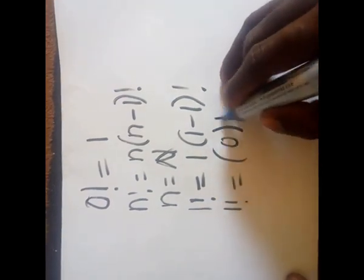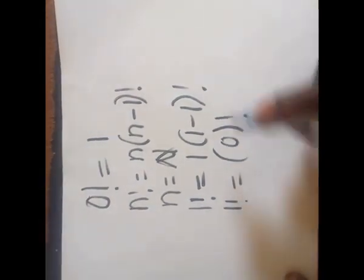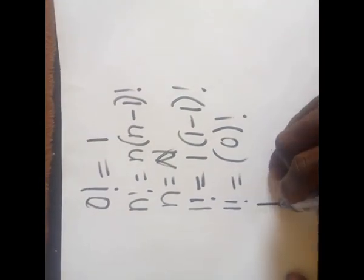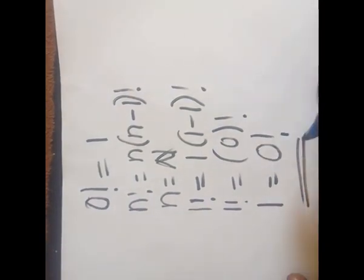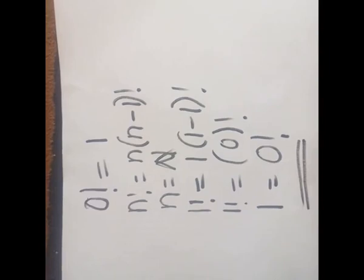So 1 factorial, which we already know is 1, equals 1 times 0 factorial. Therefore, we were able to prove that 0 factorial equals 1.